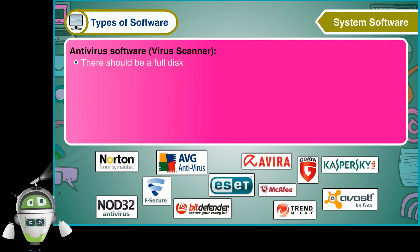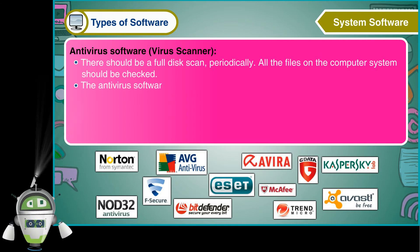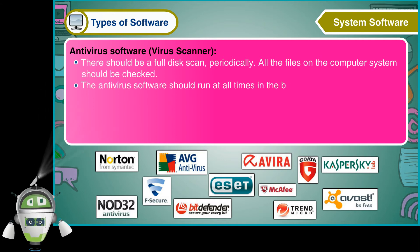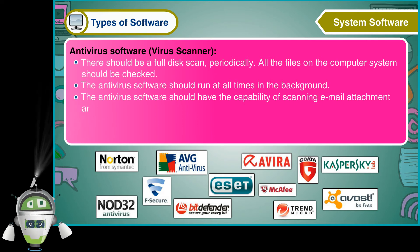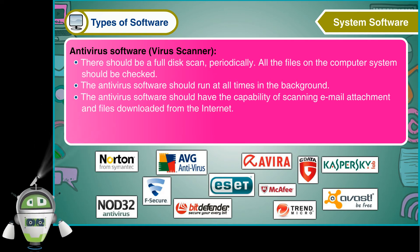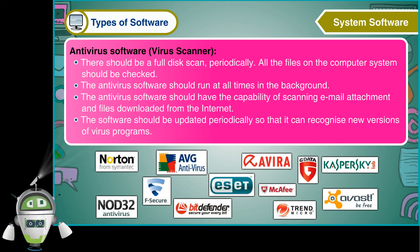There should be a full disk scan periodically. All the files on the computer system should be checked. The antivirus software should run at all times in the background. It should have the capability of scanning email attachments and files downloaded from the internet. The software should be updated periodically so that it can recognize new versions of virus programs.